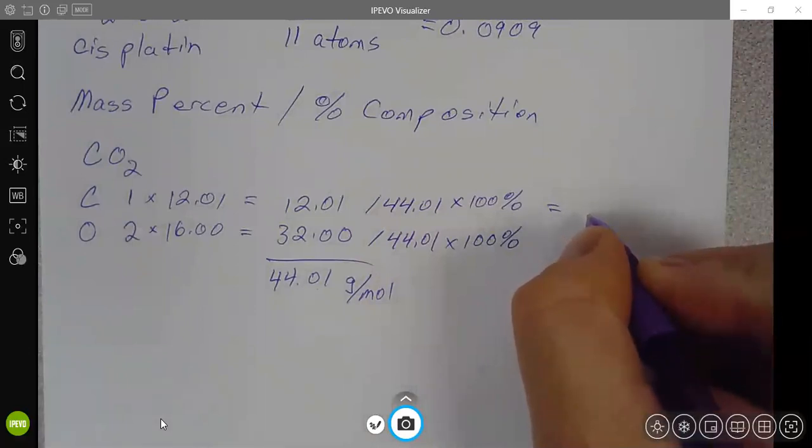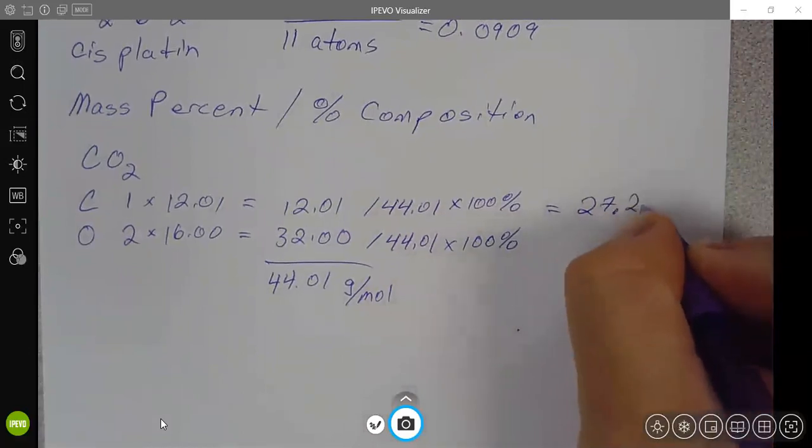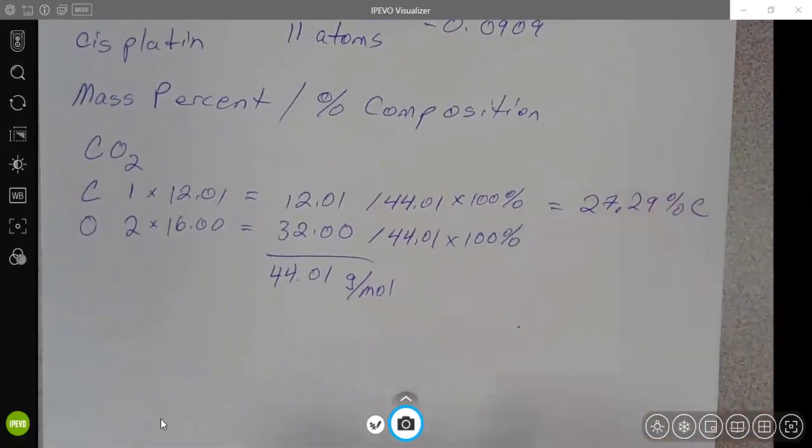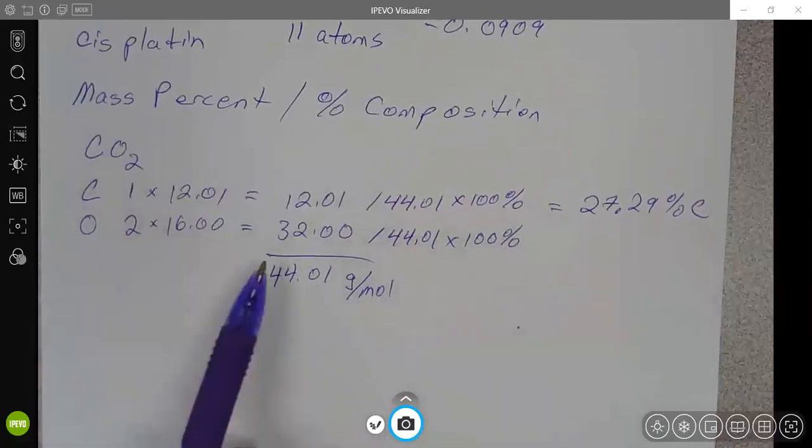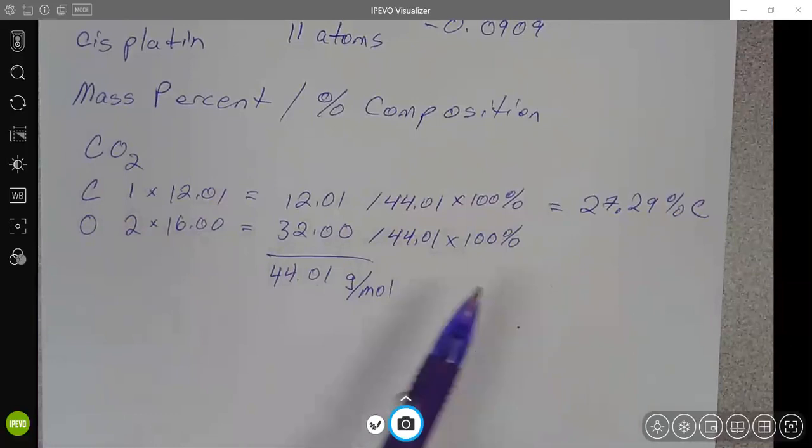You might be able to keep one more place, but I would say this would be 27.29 percent carbon. This would be the mass percent of carbon in carbon dioxide.